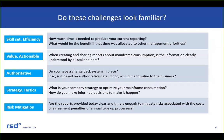What is your company strategy to optimize your mainframe consumption and what are you doing to make that happen? What are the strategies you have in place and what information do you have to make those things happen? Are the reports provided today clear and timely enough to mitigate risk associated with costs, penalties in agreements, and annual true-up processes? Many consumption-based licensing costs are wrapped up in processes where there are either penalties at end of agreement or annual true-up payments.